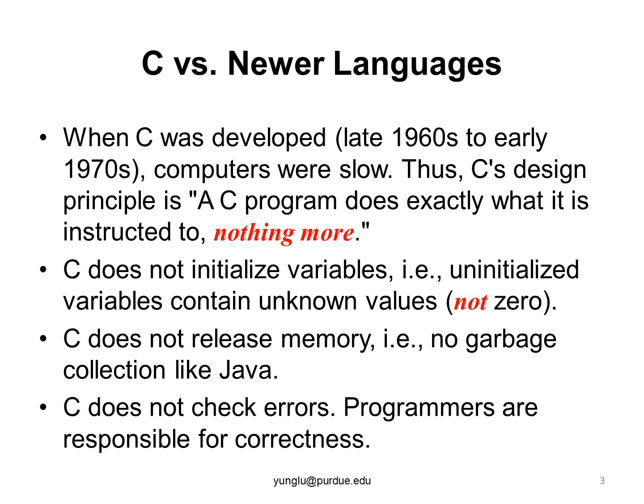C does not initialize variables for you. If your program creates a variable and it has not been initialized, its value can be anything. You must not assume uninitialized variables are zeros. Some students assume that uninitialized variables are zero. This is incorrect.